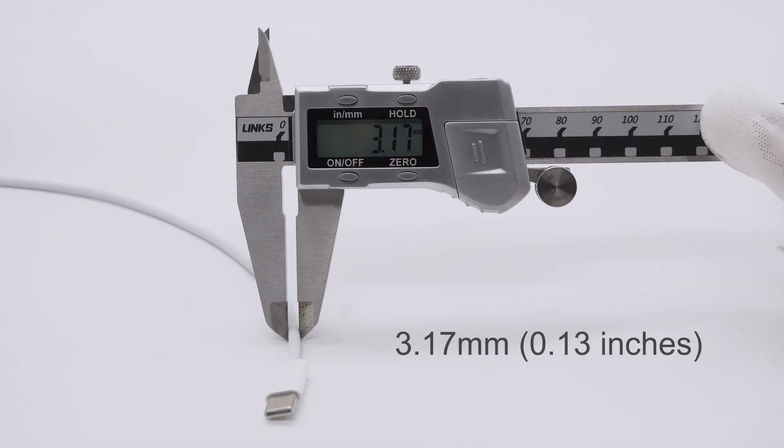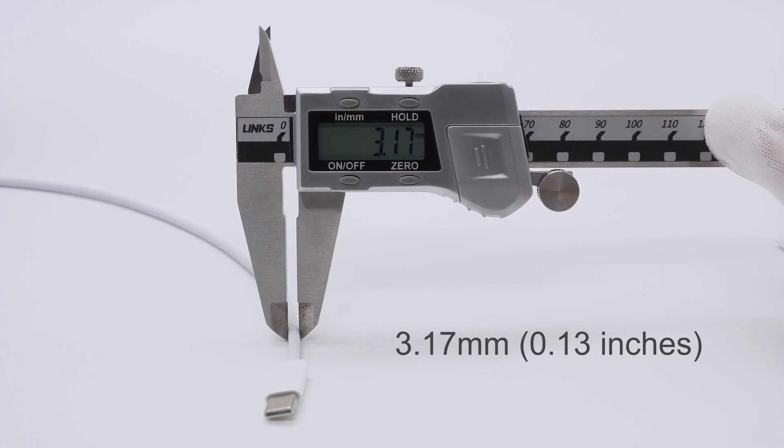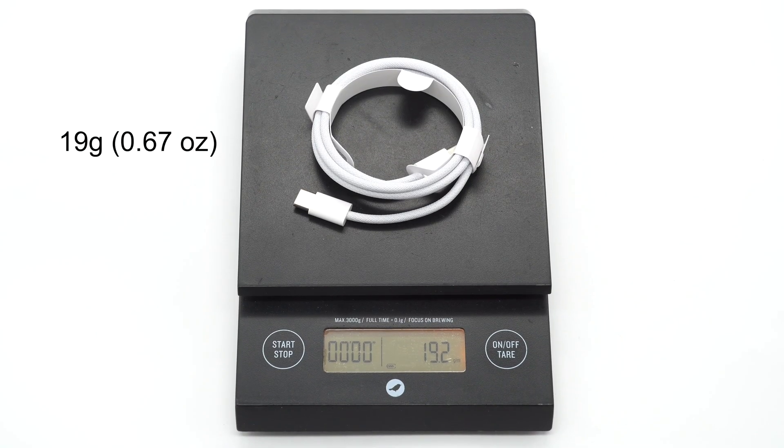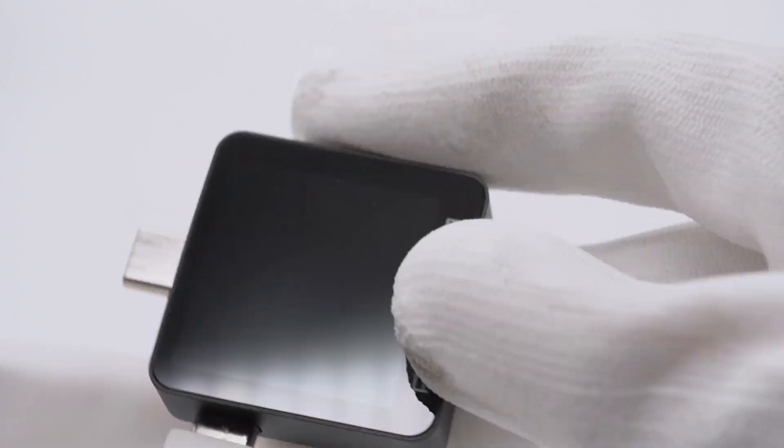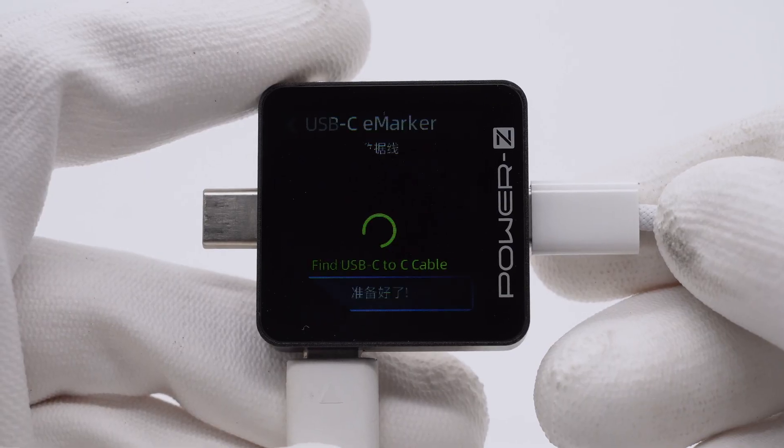The diameter is about 3.17mm, thinner than the Apple 240W cable we took apart before. The overall weight is about 19g. ChargerLab Power Z KM003C shows it does not have any marker chip.